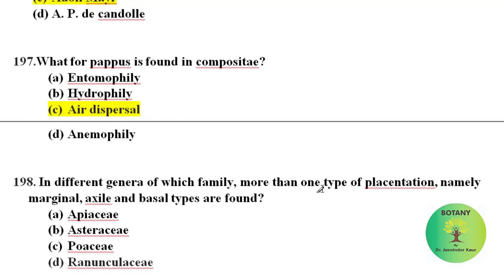In which family is more than one type of placentation found — namely marginal, axile, and basal placentation — in different genera? That family is Ranunculaceae.